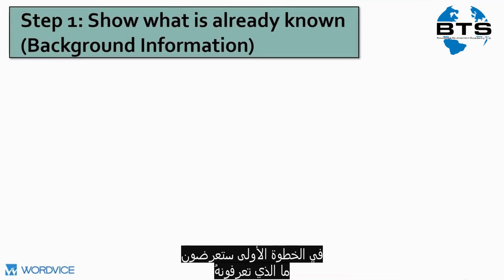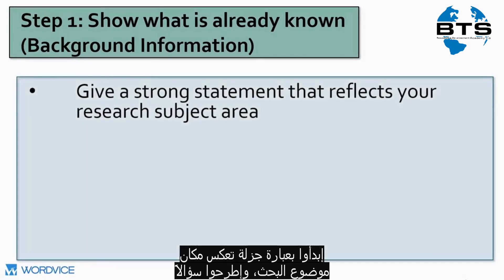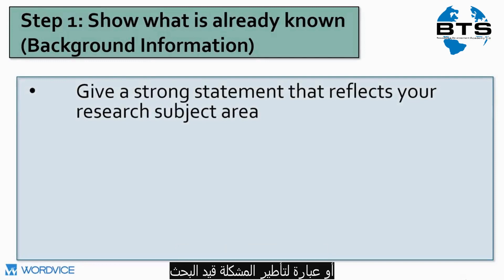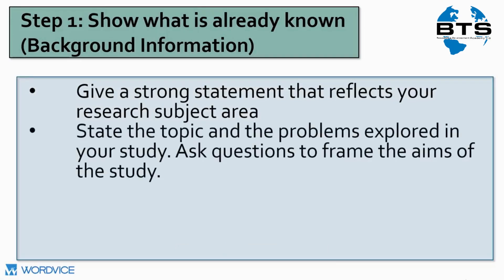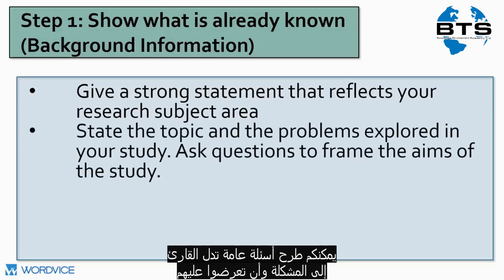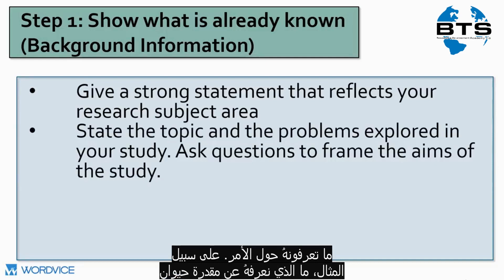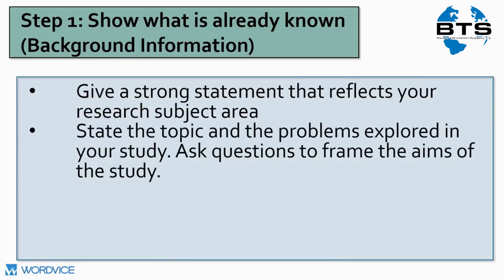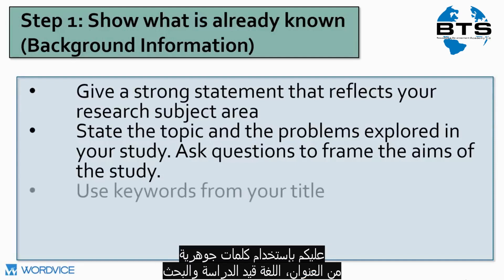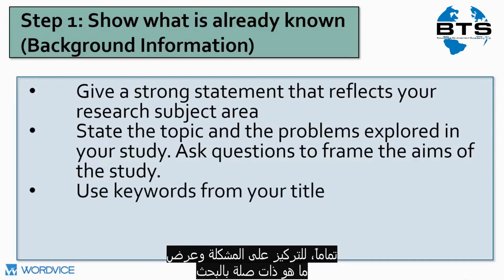In step one, you will show what is already known. Start with a strong statement that reflects your research subject area and ask questions or post statements to frame the problems your study explores. You can ask general questions to guide your readers to the problem and show them what we already know. For instance, what do we know about the breathing capability of bottlenose dolphins? Use keywords from your title — the exact language of your study — to zero in on the problem at hand and show the relevance of your work.